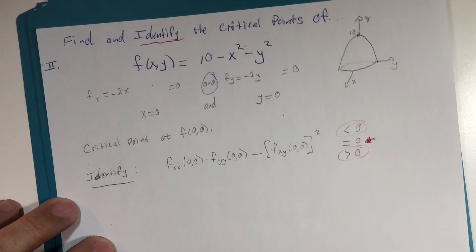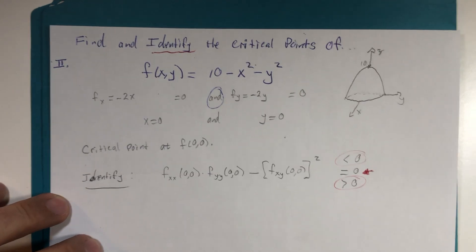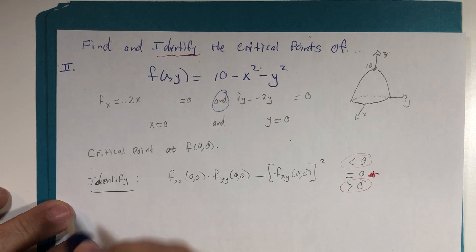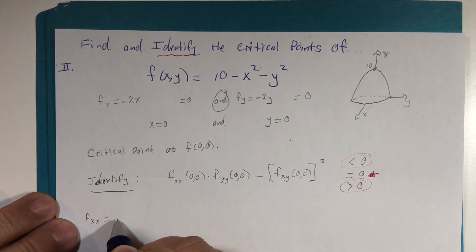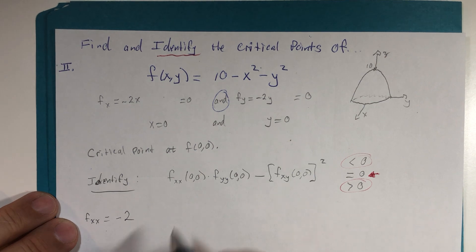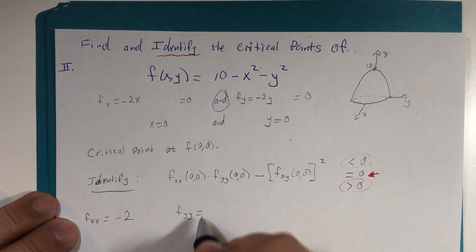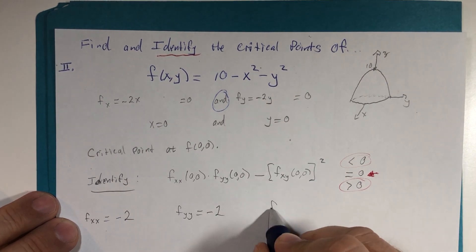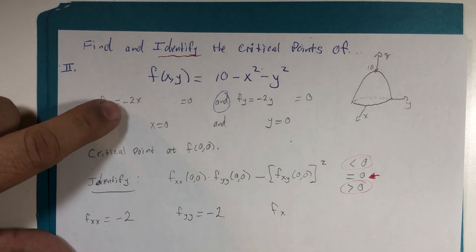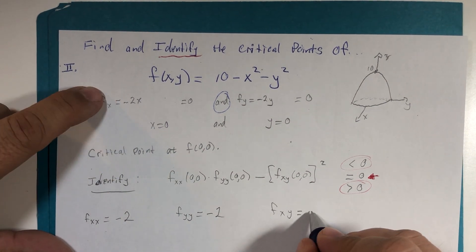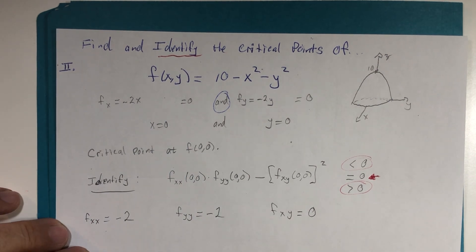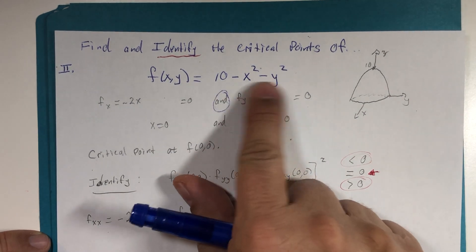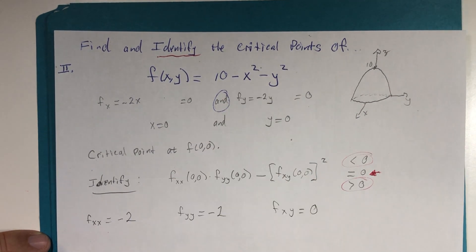We have our first x derivative is negative 2x. So the second x derivative is equal to negative 2 for all x and y values. The second y derivative is also negative 2. And if you start with x and then take the y derivative, you're going to get zero. There are no variables here. So there's no function substitutions that have to take place. We're just constants. It's a second degree polynomial. So second derivatives are just going to be constants.